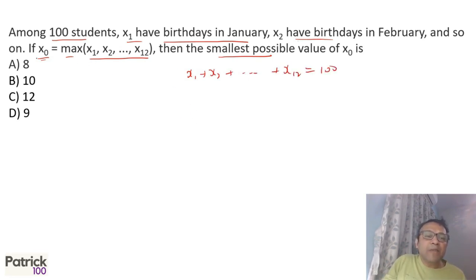It will be minimum x₀ when all are equal, which means 100 ÷ 12 = 8.33. Now 8.33 is not possible because the values have to be integers since they indicate number of students. Which means there will be students with 9, and students with 8. In that case, the maximum value x₀, the max of all these values, and the smallest possible value will be 9.